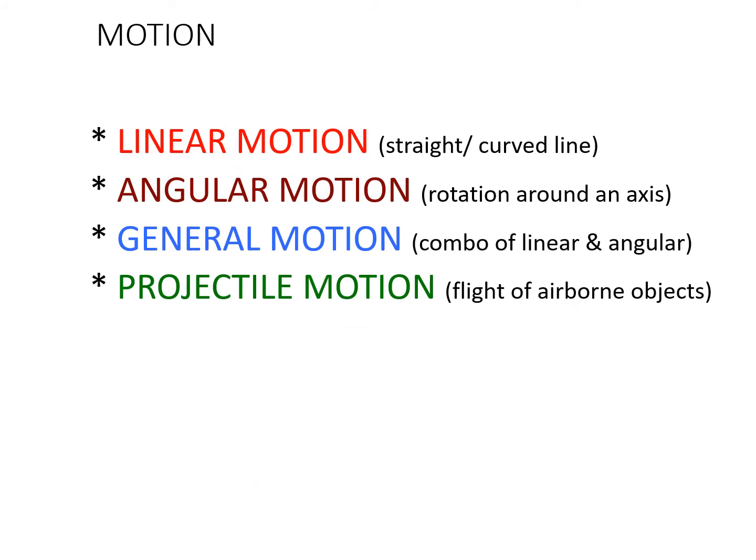Here's a quick overview of the four types of motion. The first three will be covered in this slideshow. Projectile motion will be covered next week — that's when we look at how we throw and kick balls for maximum distance, or project our body through the air for events like high jump and pole vault.